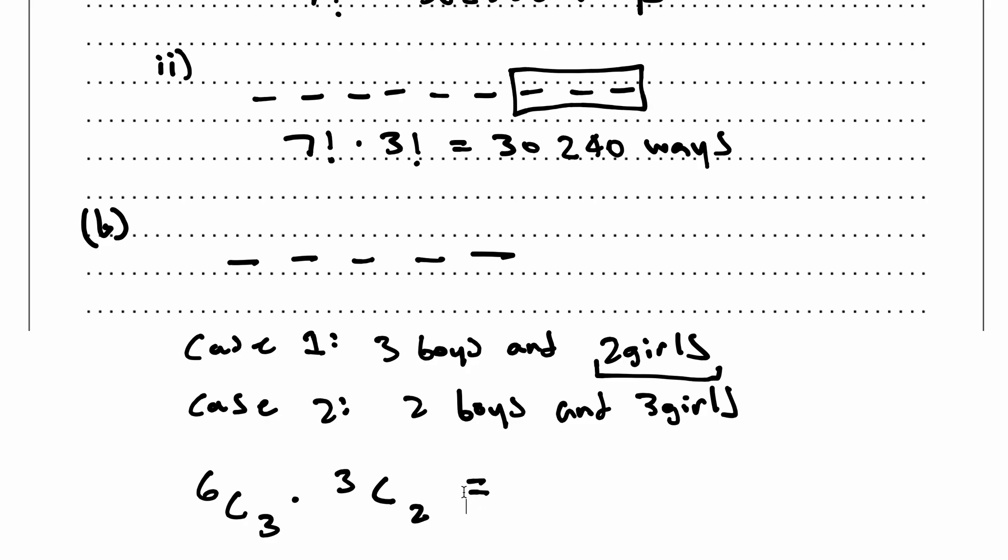So putting this on my calculator, what do I get? Let's see. Six choose three times by three choose two. That's equal to 60.